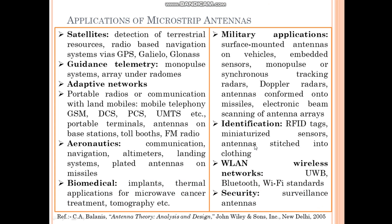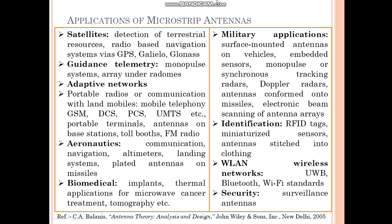Microstrip Antennas have various applications in the area of communication and radar. They can be used in satellite applications, guidance, telemetry, adaptive network technology, aeronautics, biomedical, military applications, identification, WLAN wireless networks, and security. Important applications where Microstrip Antennas are used include GSM, DCS, UMTS, FM radios, space stations, Wi-Fi, ultra wideband, and surveillance systems.